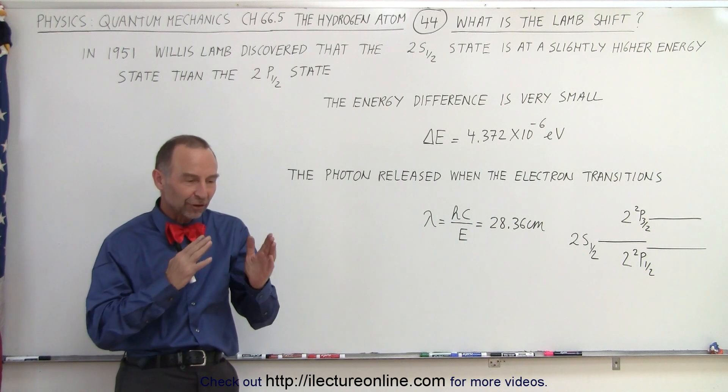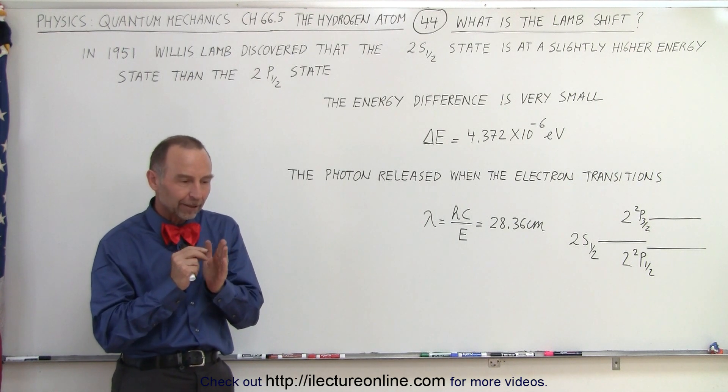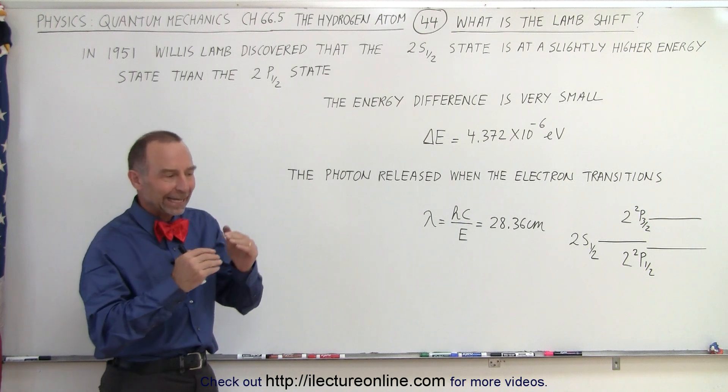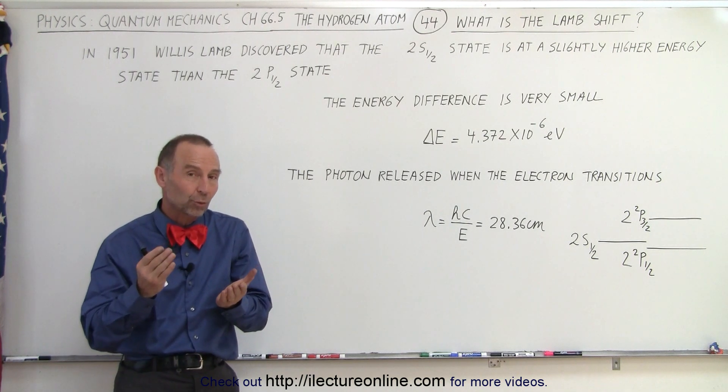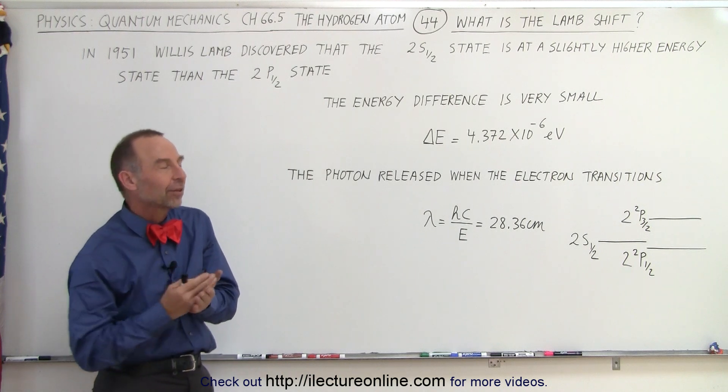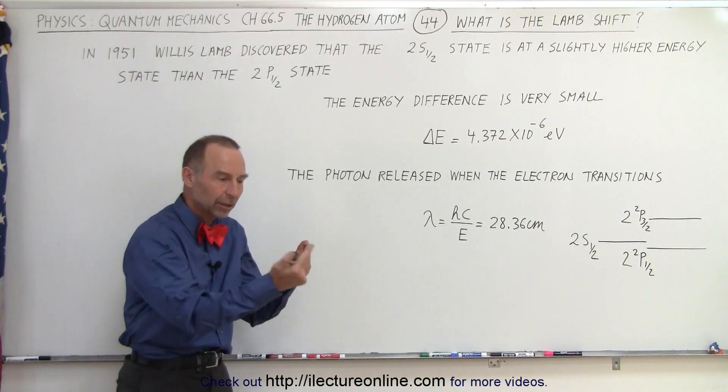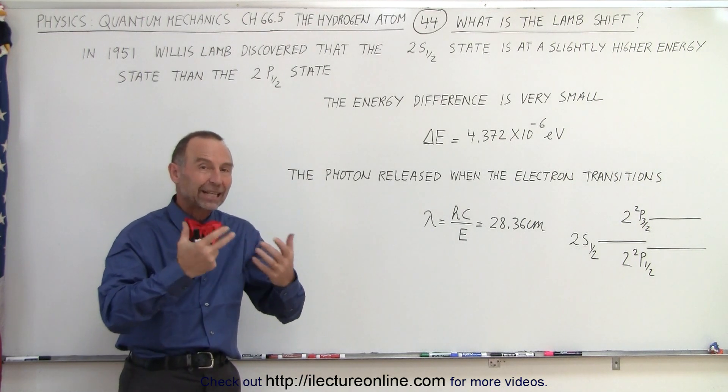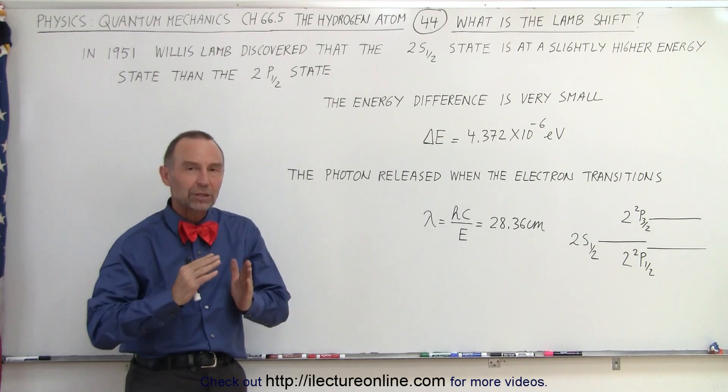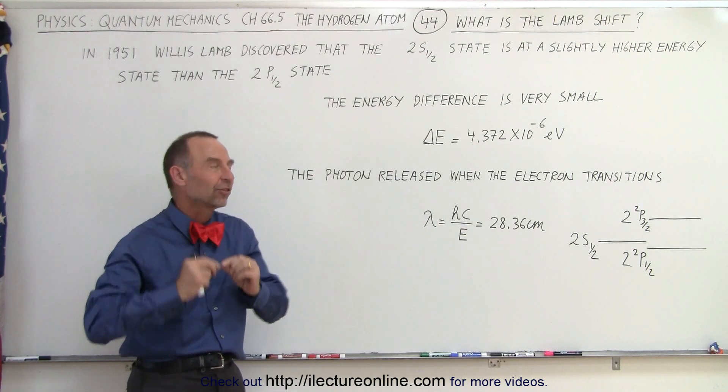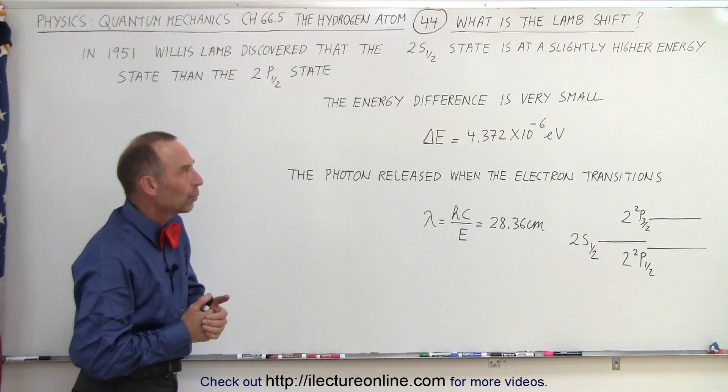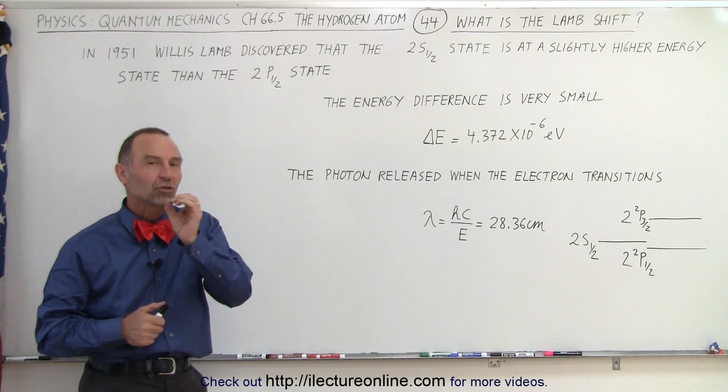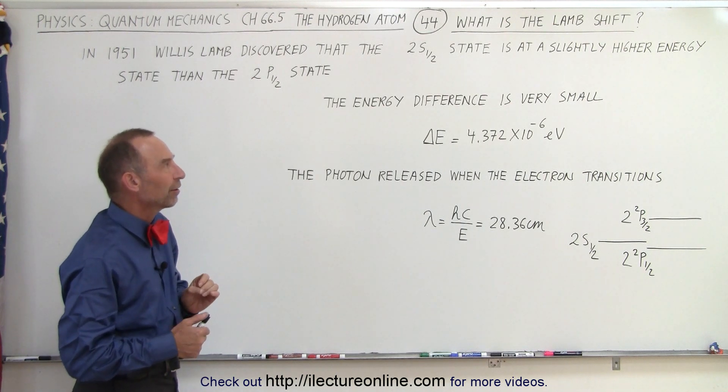Just like we discovered a very subtle difference in energy levels between states because of the interaction between the spin property of the electron and the orbital motion causing a magnetic field to exist, and the interaction between those causes slight differences in energy levels leading to fine structure, we see an additional even smaller shift called the Lamb shift.